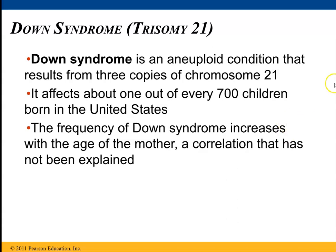Trisomy 21 happens in one out of every 700 children. Folks with Down syndrome have several risk factors for things like heart disease or diabetes, and they also have developmental and mental delays. The syndrome is fairly profound.